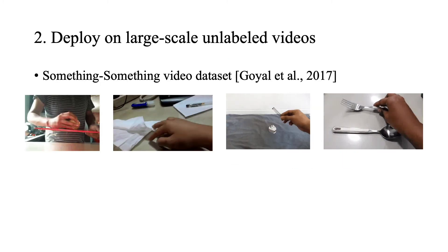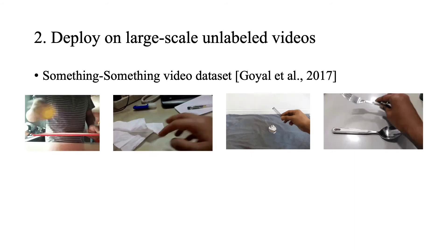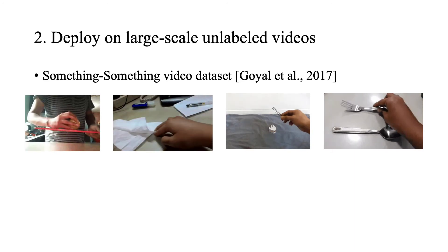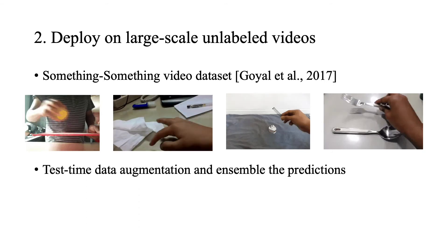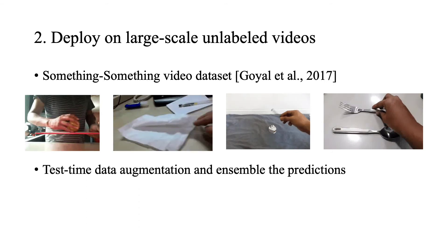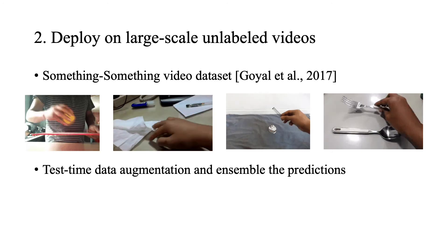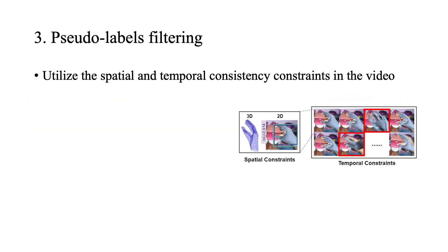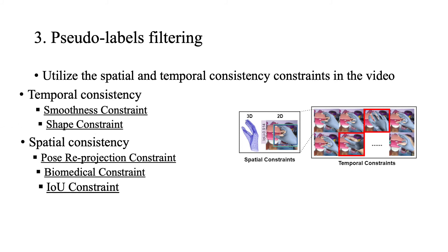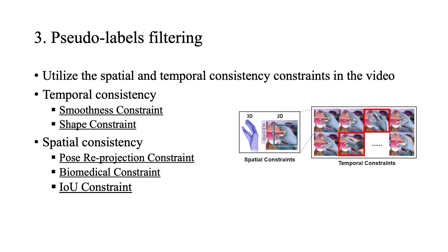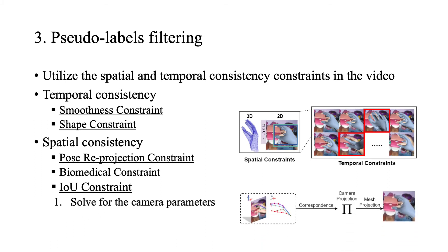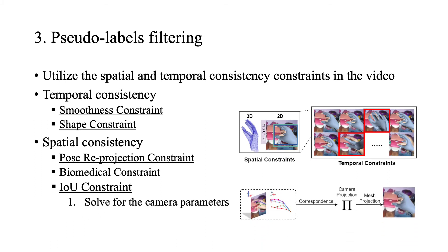After training the model on the fully annotated dataset, we deployed it on the large-scale unlabeled something-something video dataset for 3D hand pseudo-label generation. To improve estimation robustness, we do test-time data augmentation and assemble predictions. We established a pipeline for filtering by utilizing spatial and temporal consistency in the video. Take IOU constraint as an example. We solve for optimal camera parameters that project 3D joints to 2D and reproject estimated 3D mesh to 2D. We calculate IOU between the provided bounding box and reprojected ones and set a threshold for filtering.